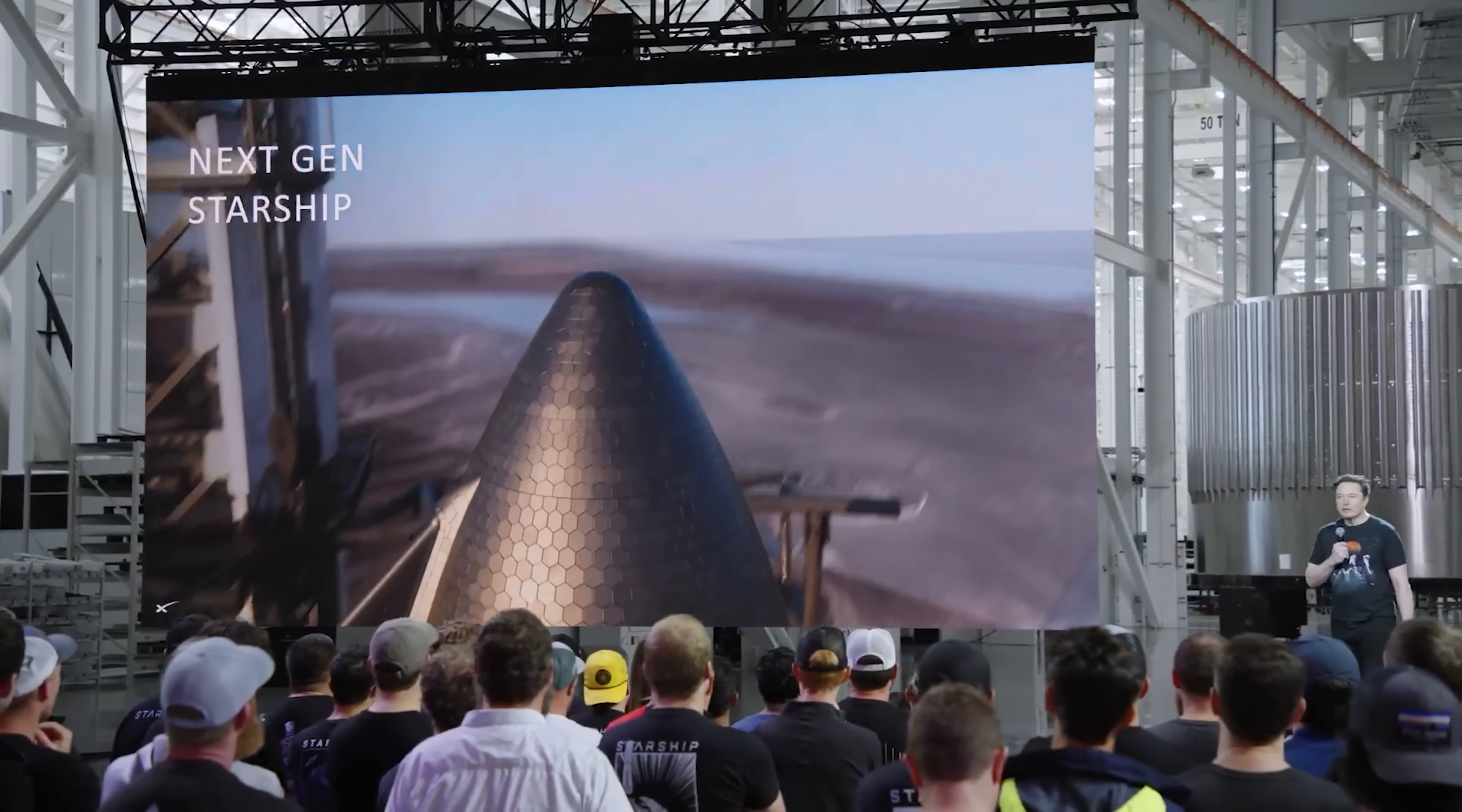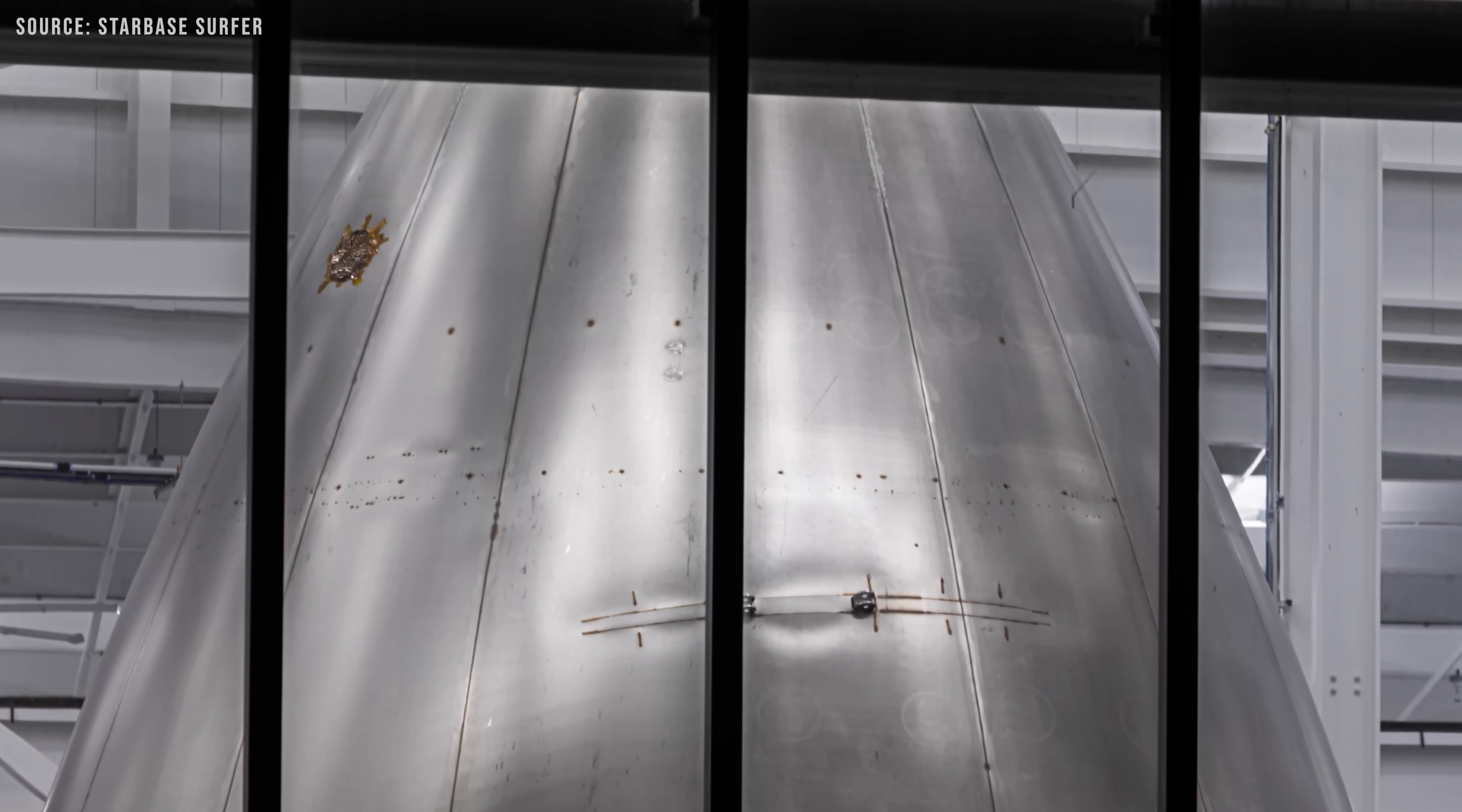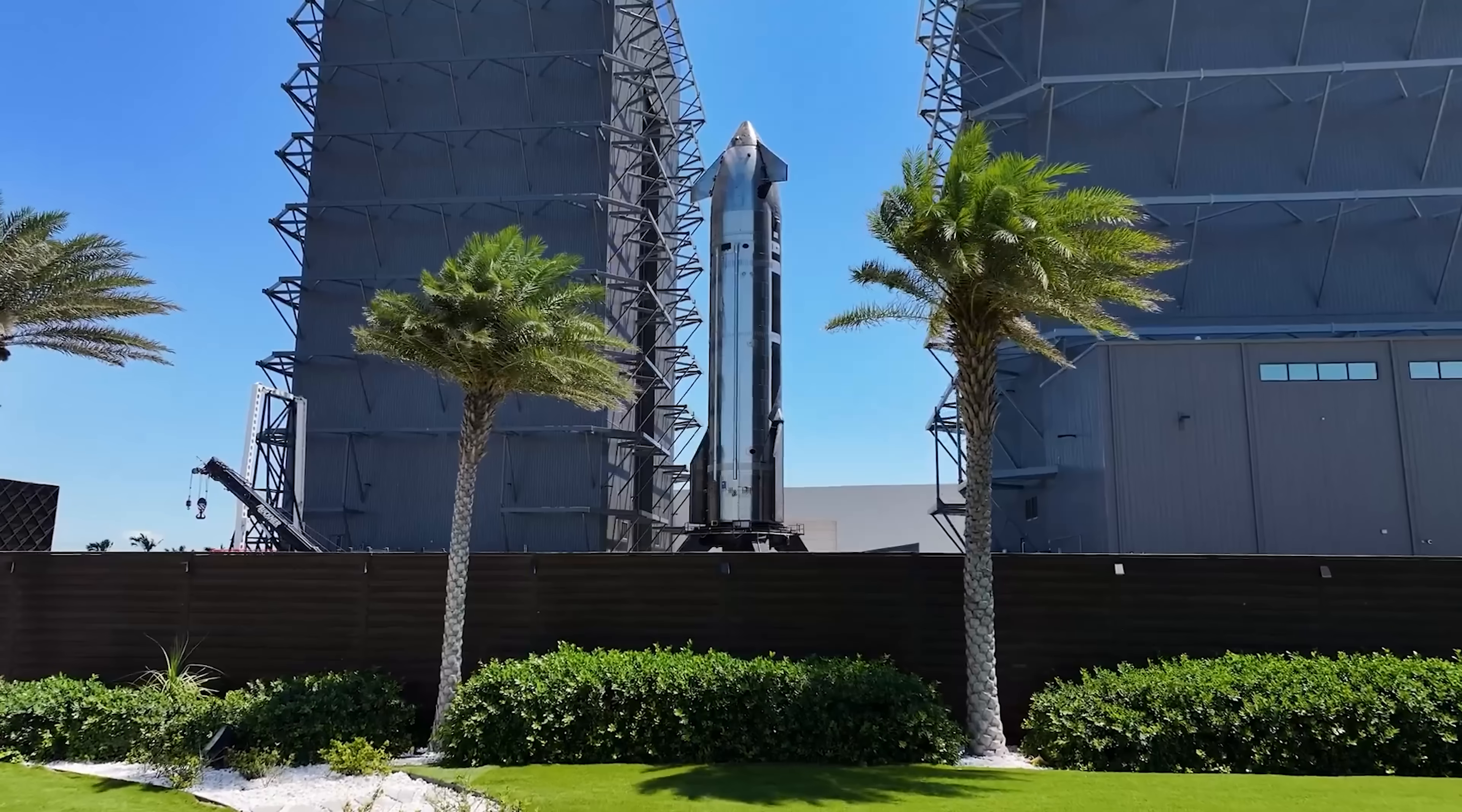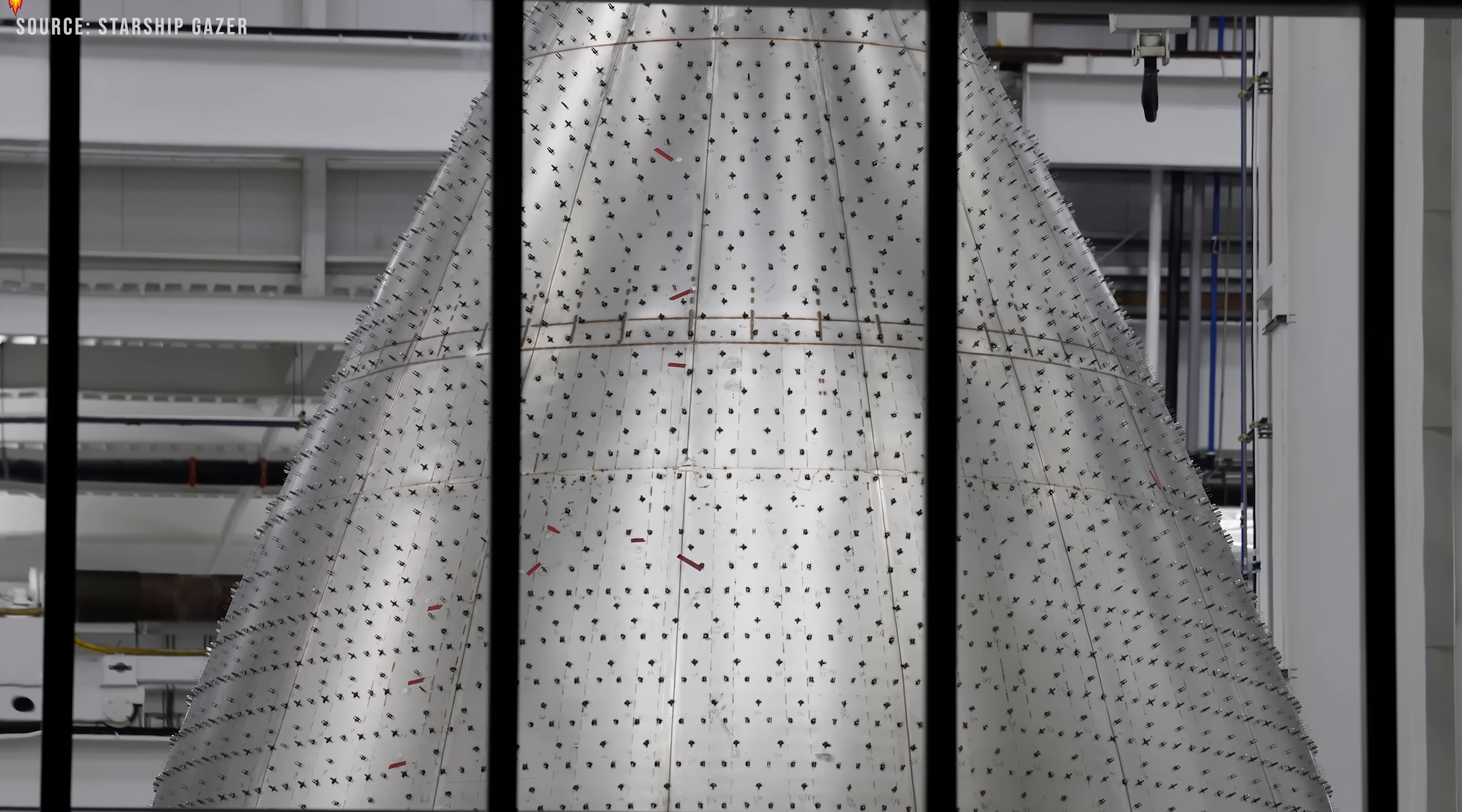If you take a close look at the weld lines in the picture, you can actually see how Starship's nosecone is built. In earlier versions, the nosecone was made from short, horizontal steel rings welded together. While that method worked, it had its limitations, especially when it came to handling the intense aerodynamic pressure and thermal stress during launch and re-entry.